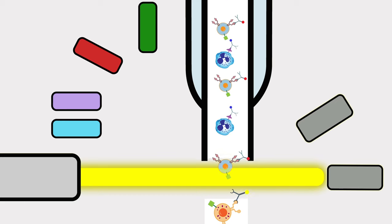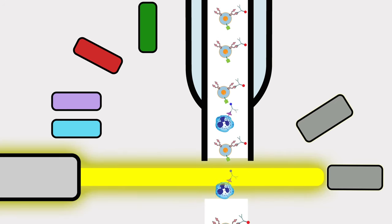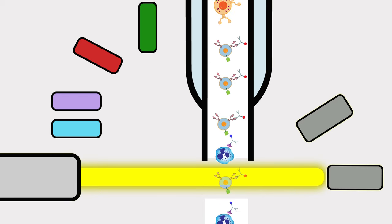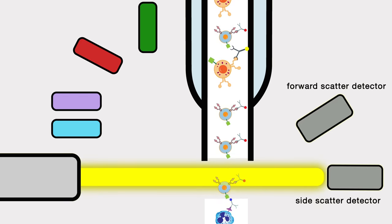It's like the conveyor belt at the checkout machine moving items along at a constant rate. After the cells make it into the sheath fluid, they are passed through the main analysis chamber of the machine. Individual cells move past a laser beam, which gives us lots of great information about the cell.